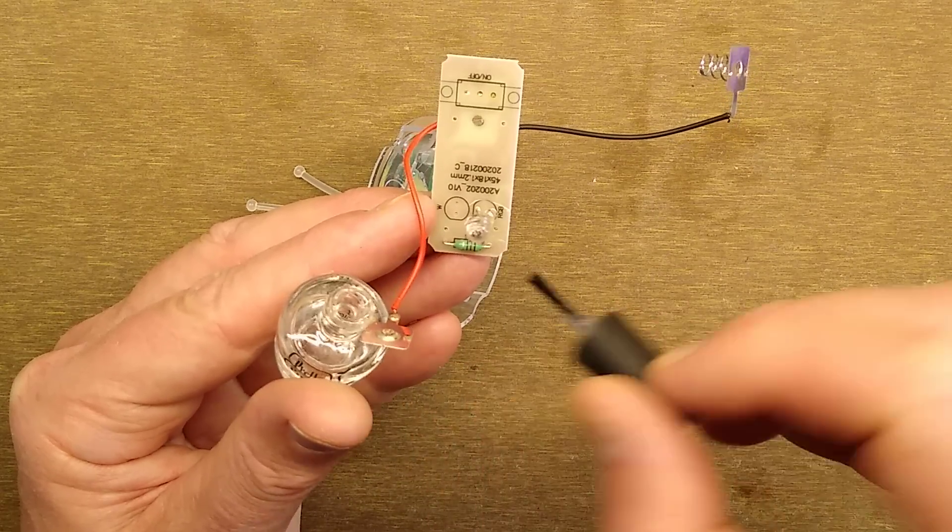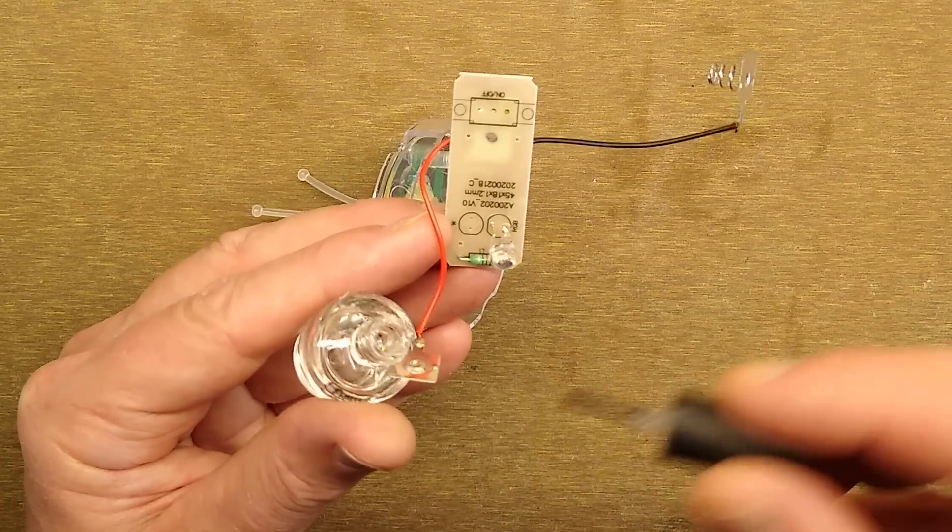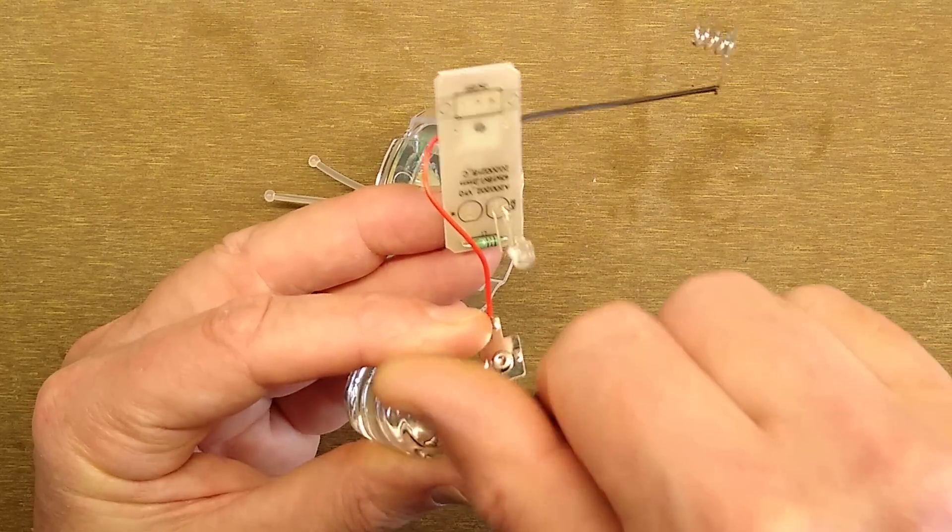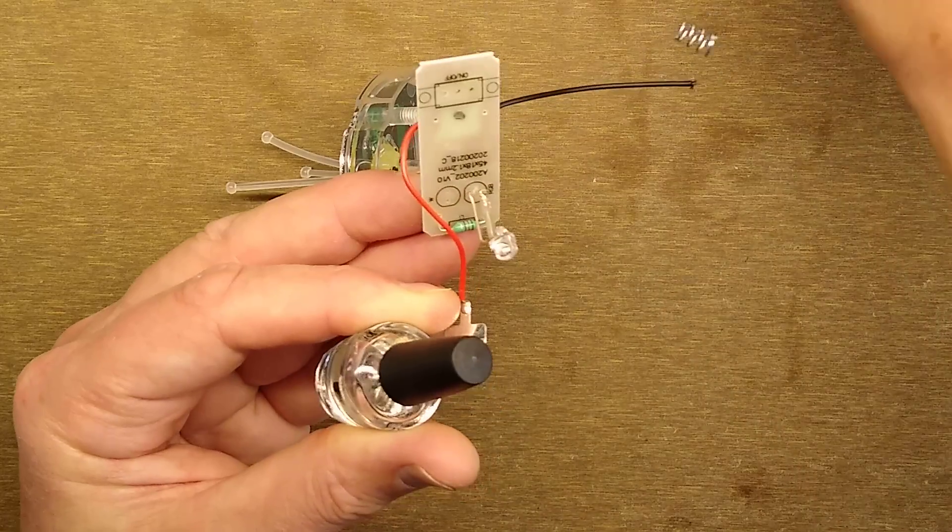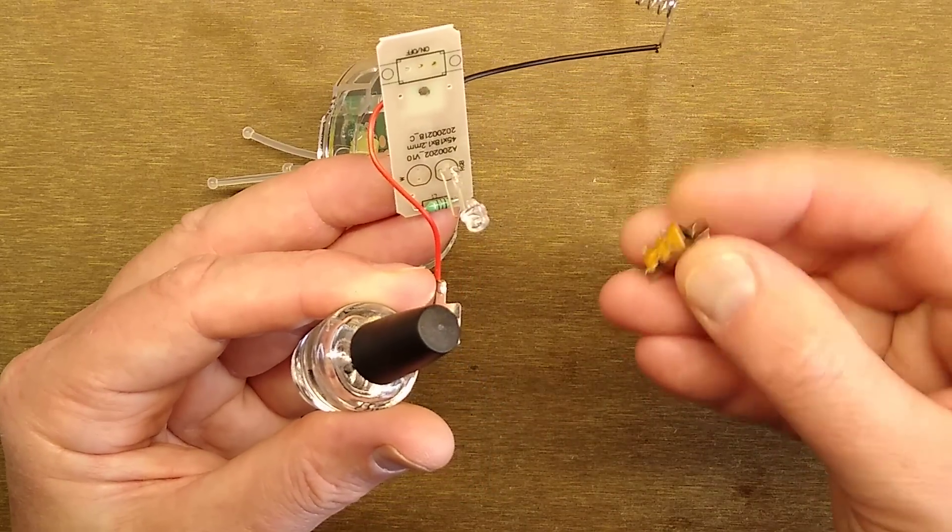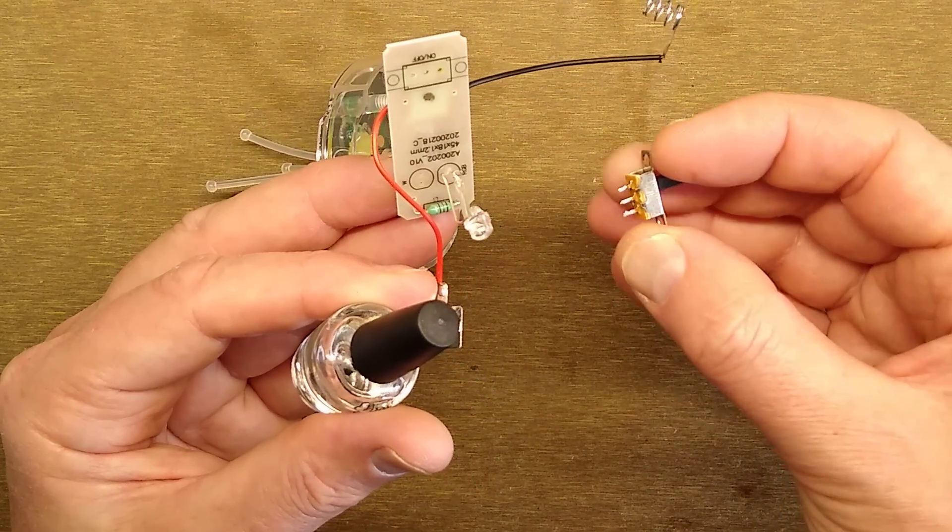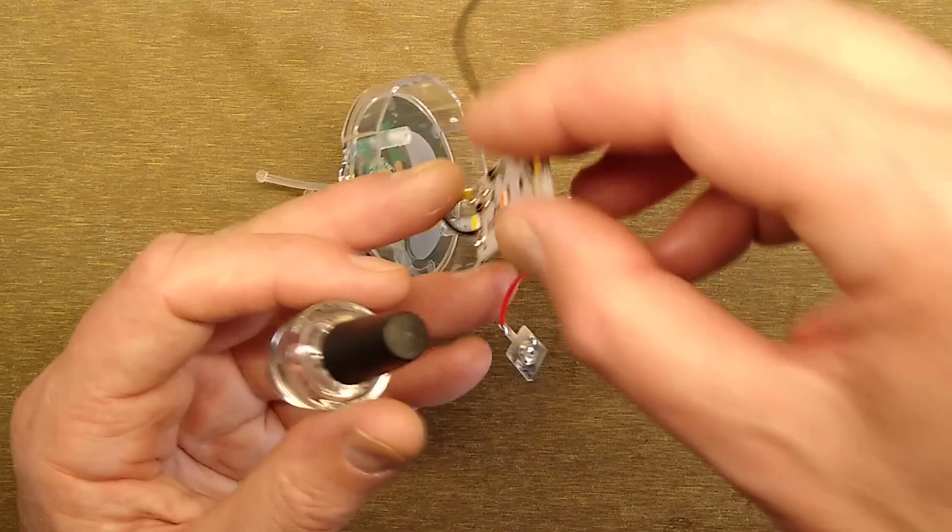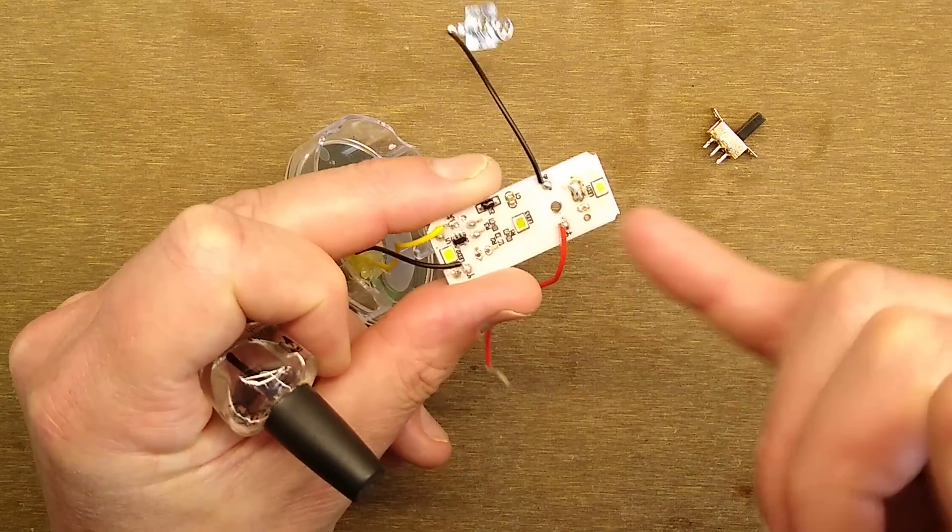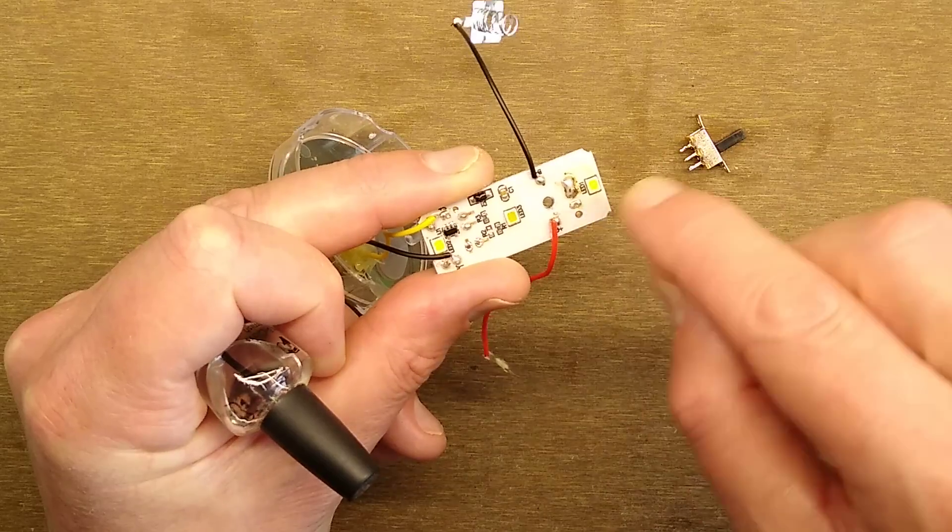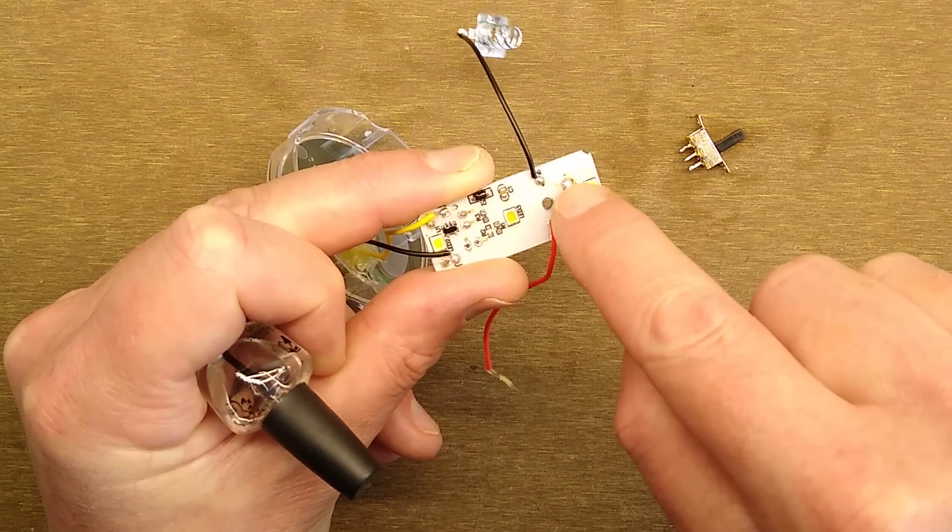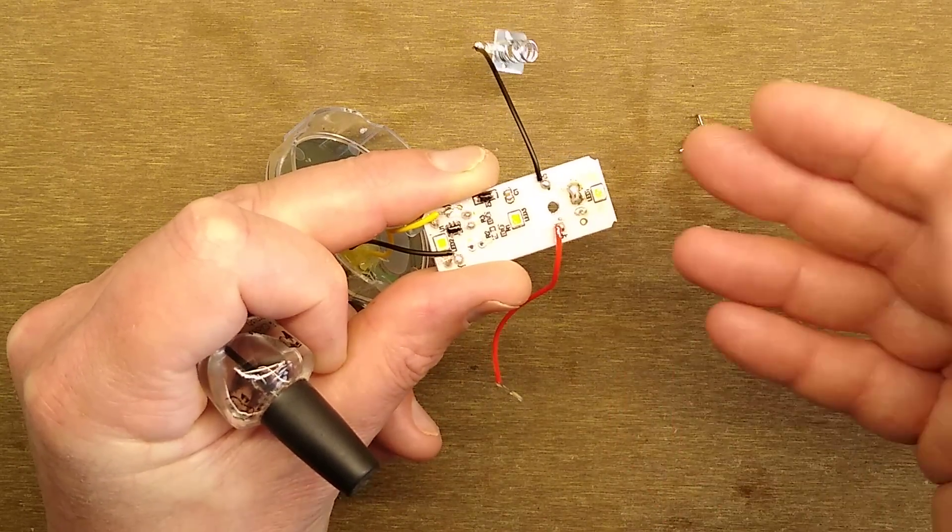I've also removed the switch completely from this light. Here's the switch—it's mainly included for isolating the battery during transportation. You can either remove it or just blob it out. You'll see that of the three connections there's usually just two connected, and if you just flow some solder onto those, you can bridge them across or put a wire link in if you wish.